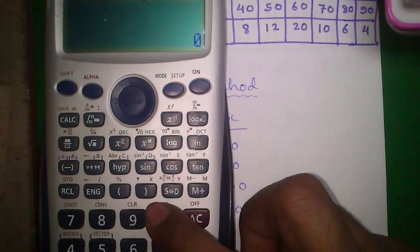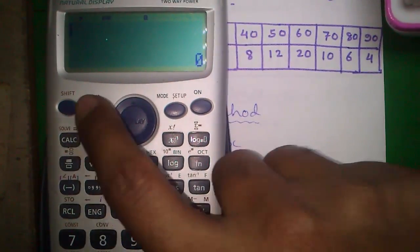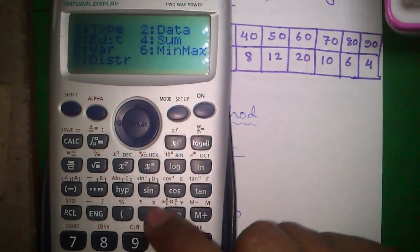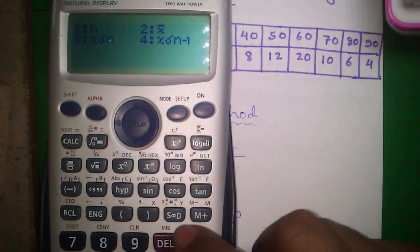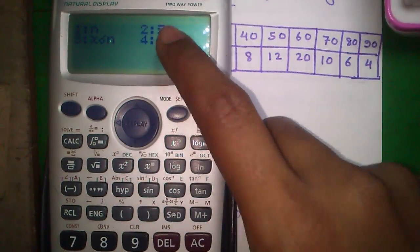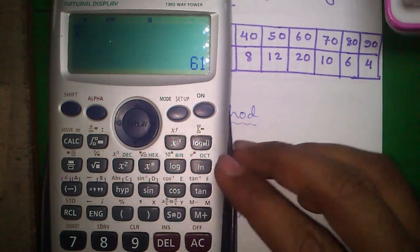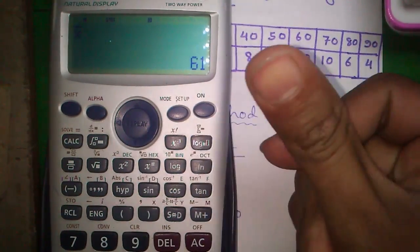Press AC to clear the screen and press shift and 1 to get into stat sub menu. Press 5 for variation mode and here you can see X bar. Press 2 for X bar and press equals to. So this is our answer, 61, using your calculator.